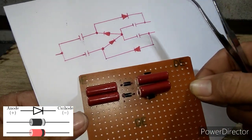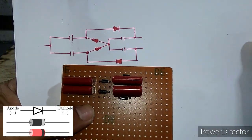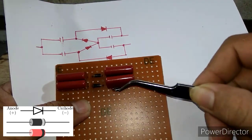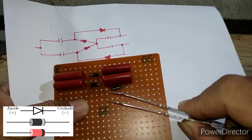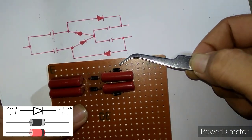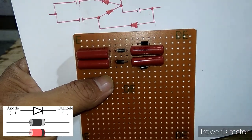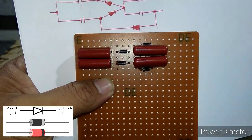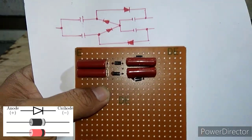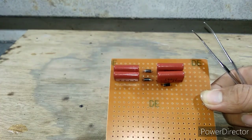Dan untuk dioda 4, kaki katoda ke salah satu kaki milar 2, dan anoda ke kaki satu lagi dari milar 4. Dan dioda 3, kaki anoda ke salah satu kaki milar 1, dan kaki katoda ke kaki satu lagi dari milar 3. Oke, semoga kawan-kawan paham.